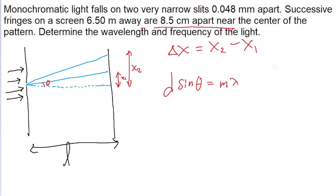Now before we can use this formula there are a few things we need to make clear. First, this sine theta term is kind of useless to us right now because we're not given any angles. But what we can do is assume that the angles are relatively small because our distance L is 6.5 meters away, that's pretty far, and the distances between the fringes are only a few centimeters apart.